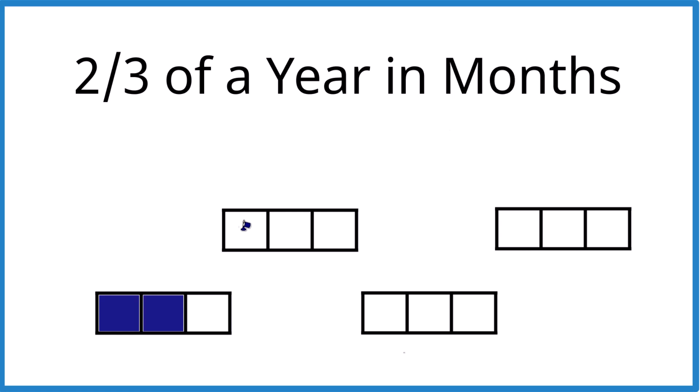One, two, then here, one, two, one, two, and one, two. Count them up: one, two, three, four, five, six, seven, eight. There are eight months. If you have two-thirds of a year, you have eight months.